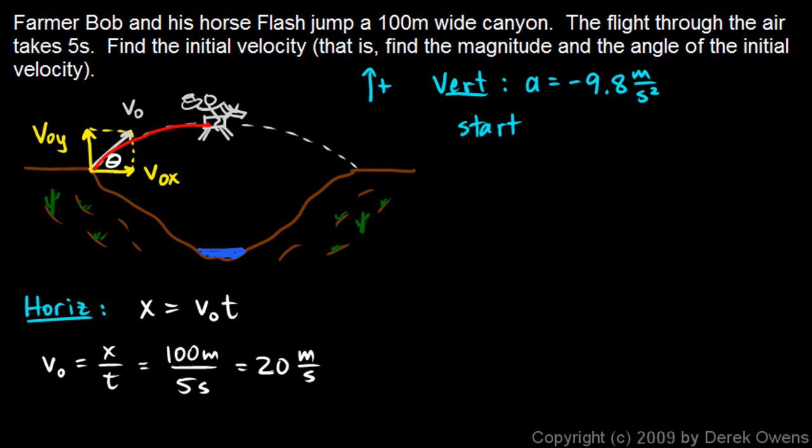I'm going to consider motion from the start to the peak. And so t ends up being half the given time. So if it's a 5 second flight for the whole jump, then just to the peak is 2.5 seconds. And the reason I think about the time just from the start to the peak is I know something about the peak. I know that at the peak, the vertical velocity is 0. He's still moving to the right at this point, but he's not moving up or down at all.